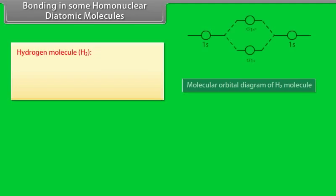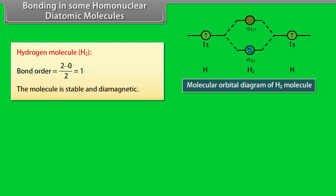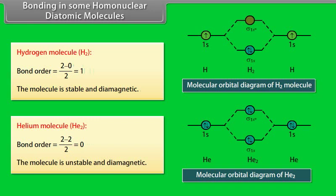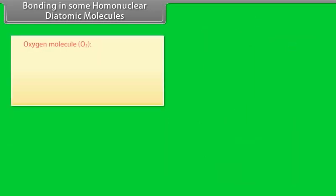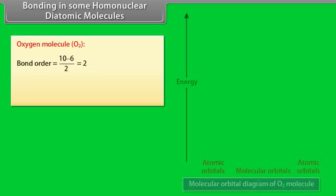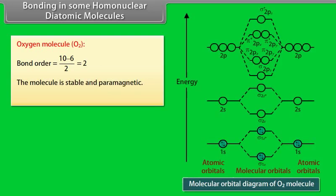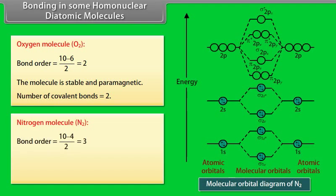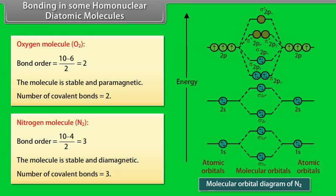Bonding in some homonuclear diatomic molecules. Hydrogen molecule H2: bond order is 1 — the molecule is stable and diamagnetic. Helium molecule He2: bond order is 0 — the molecule is unstable and diamagnetic. Oxygen molecule O2: bond order is 2 — the molecule is stable and paramagnetic, with 2 covalent bonds. Nitrogen molecule N2: bond order is 3 — the molecule is stable and diamagnetic, with 3 covalent bonds.